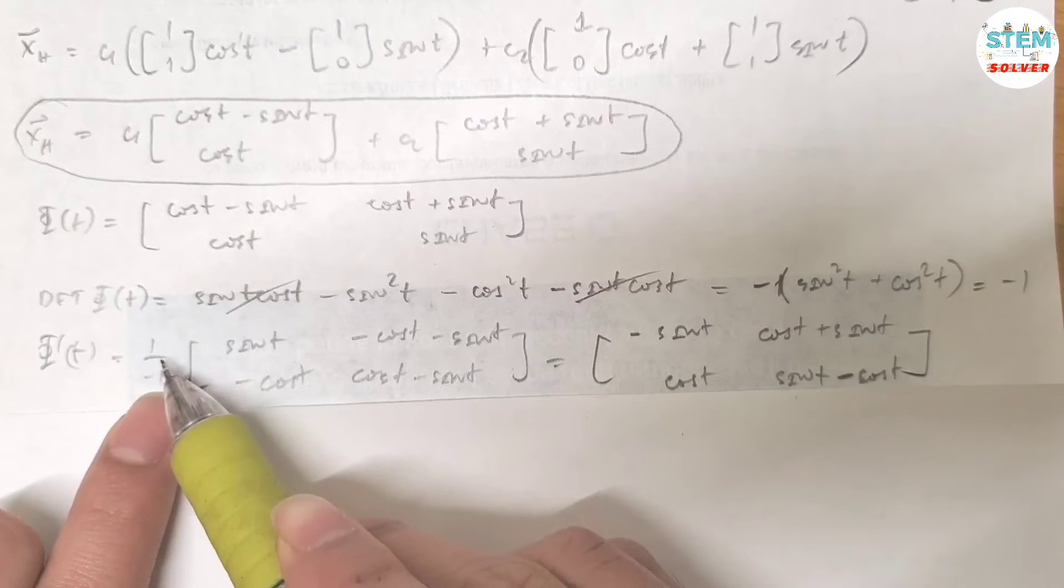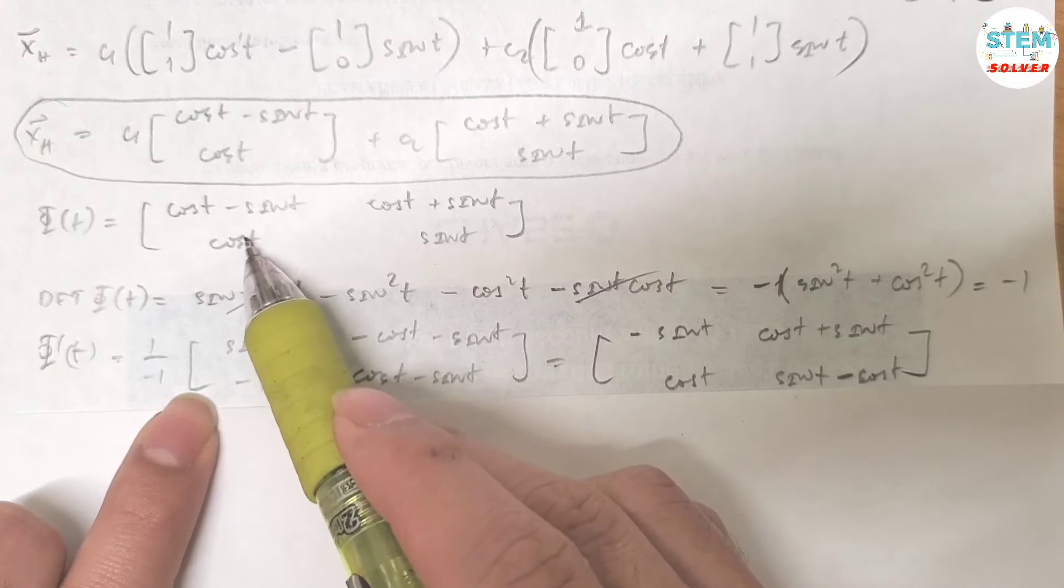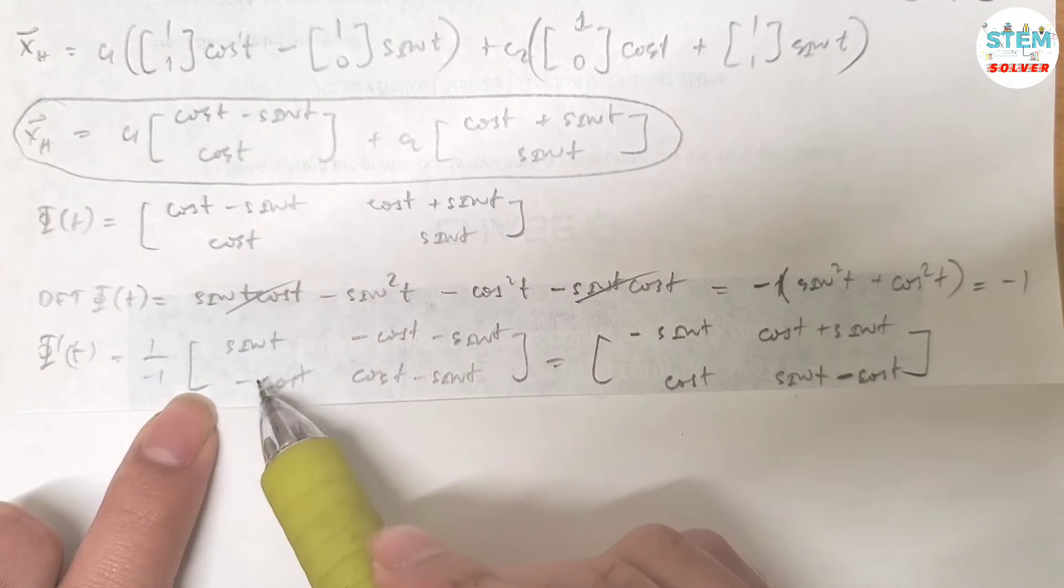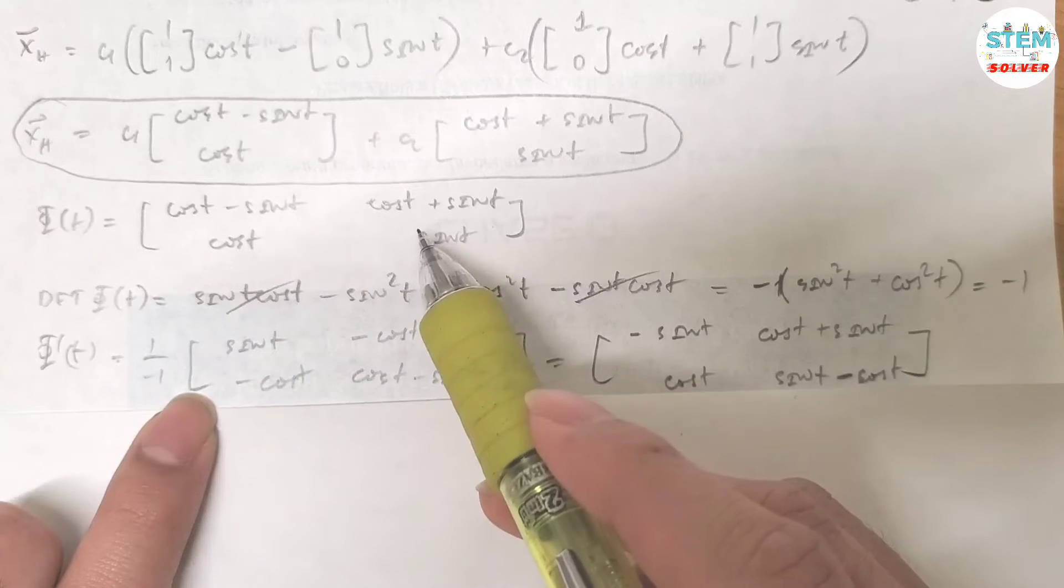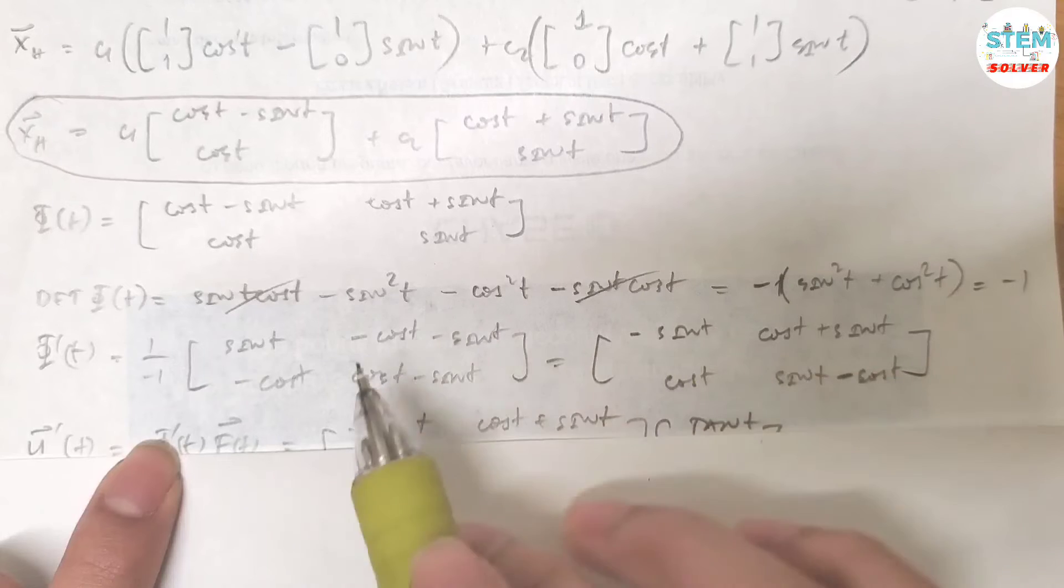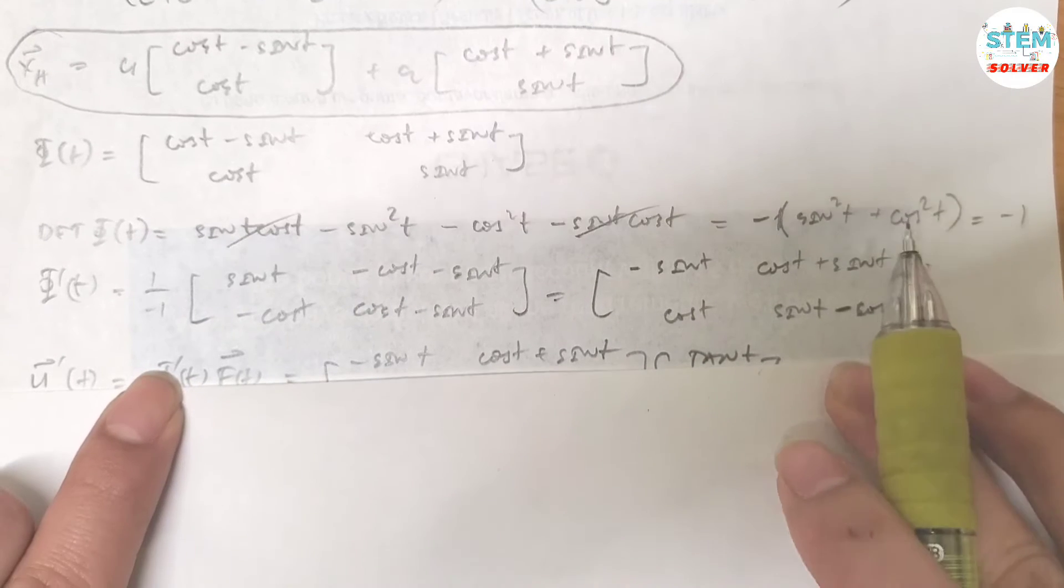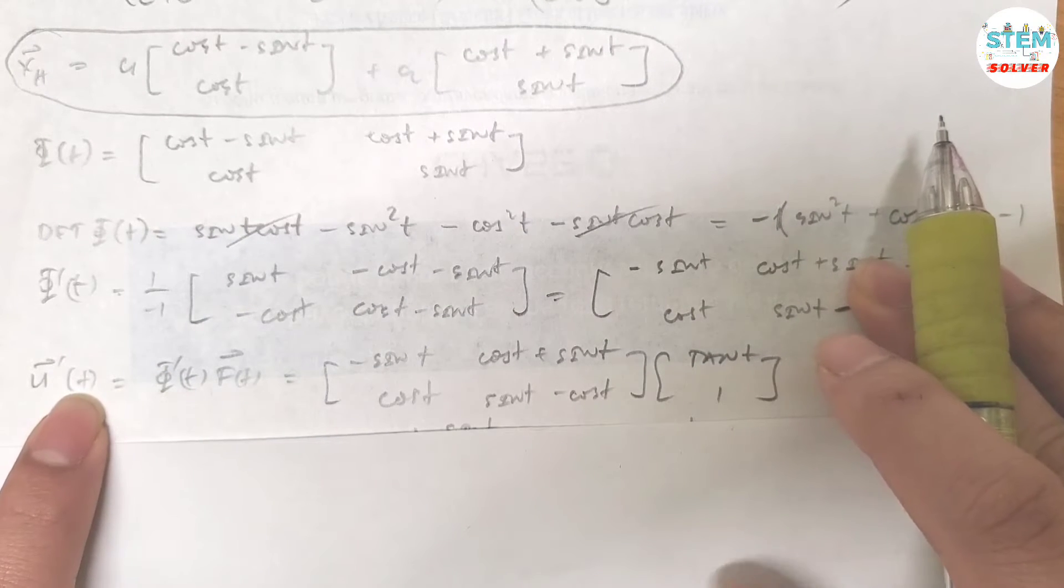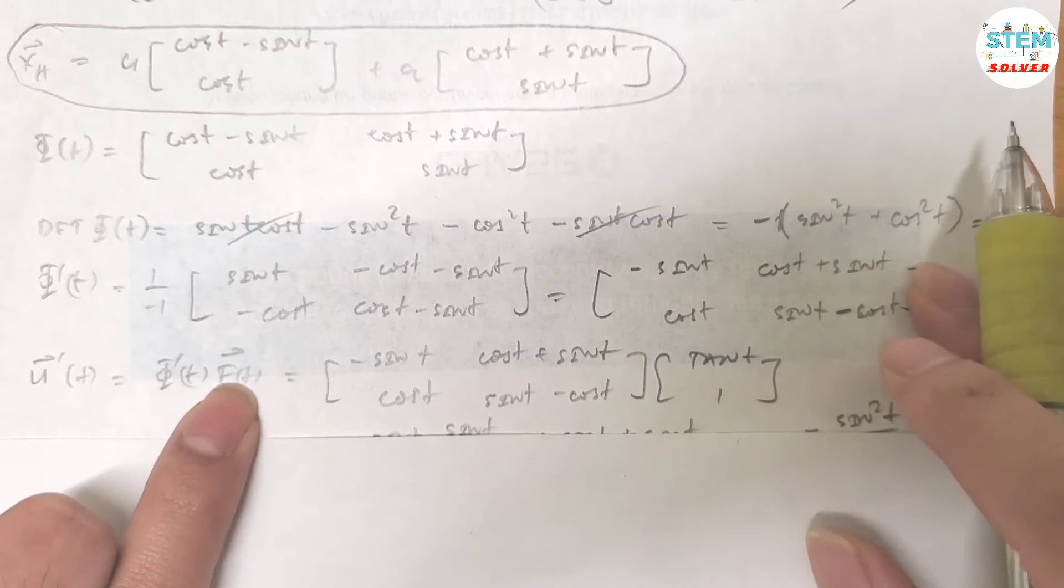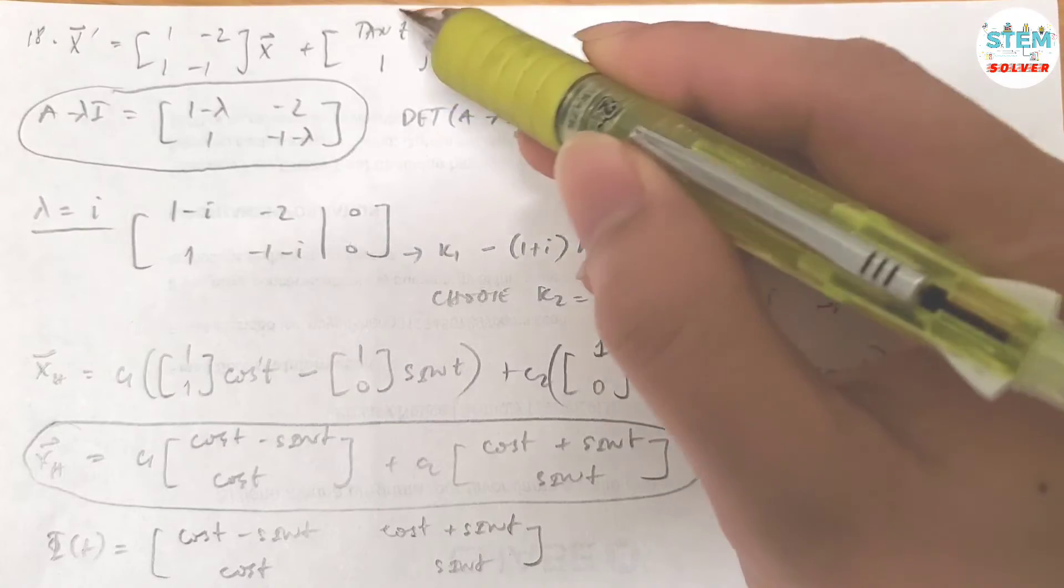Which is equal to 1 over the determinant times this matrix, but you need to change something. For the upward diagonal line, multiply by negative 1. For the downward diagonal line, you are going to switch the position. Bring this up, bring this down. Doing this, it will give you this matrix. Then you need to find vector u prime of t. It is equal to inverse Φ(t) times f(t). What is f(t)? F(t) is this vector, okay?